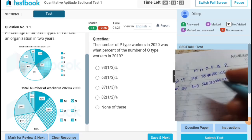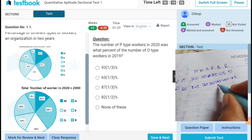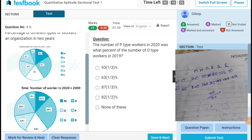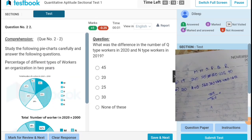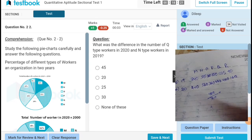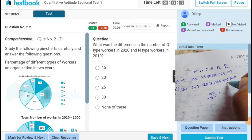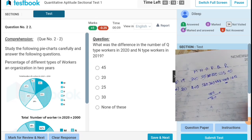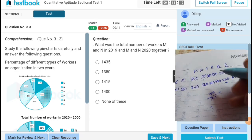Next, the number of P type workers in 2020, that is 280. What percent... 93 and 1/3 percent. The difference in number of Q type workers in 2020 and type workers in 2019 is 25. What was the total number of workers M and N in 2019? 615.